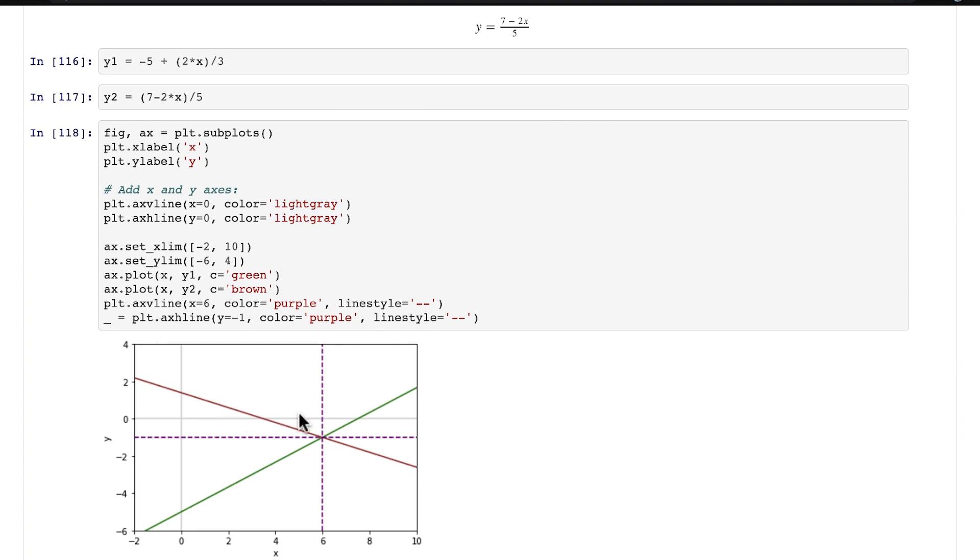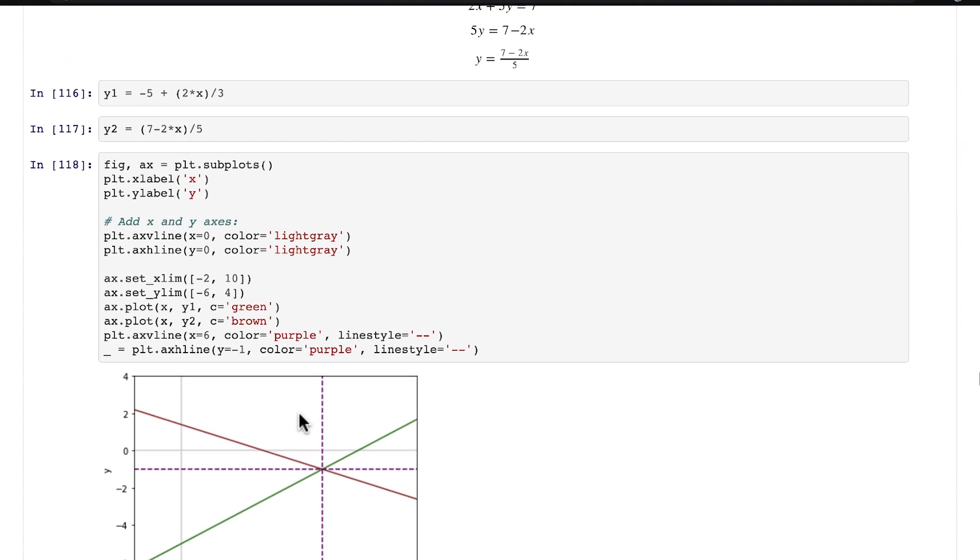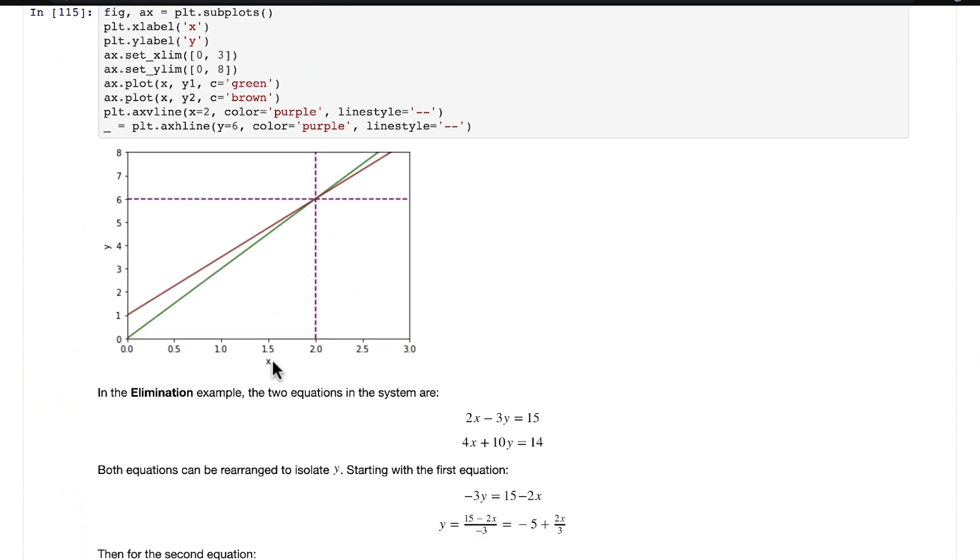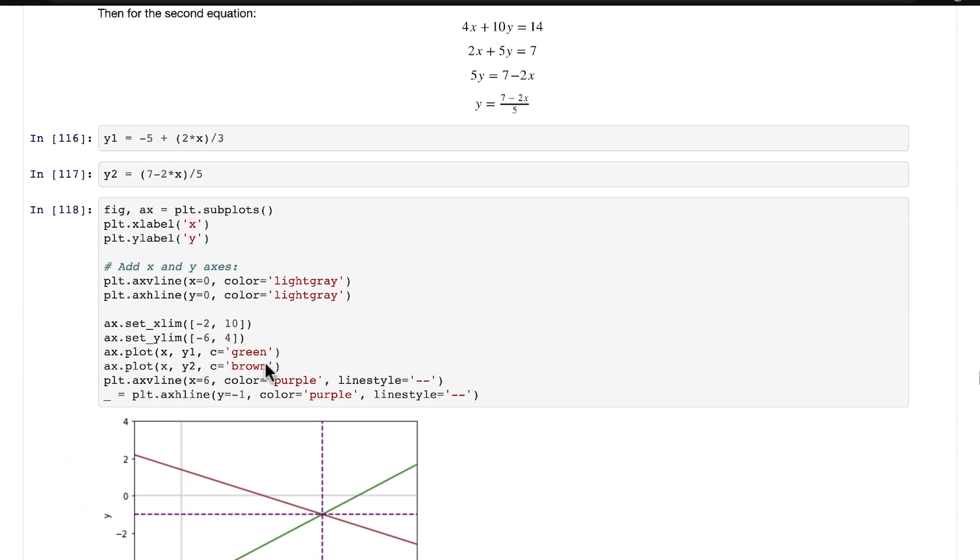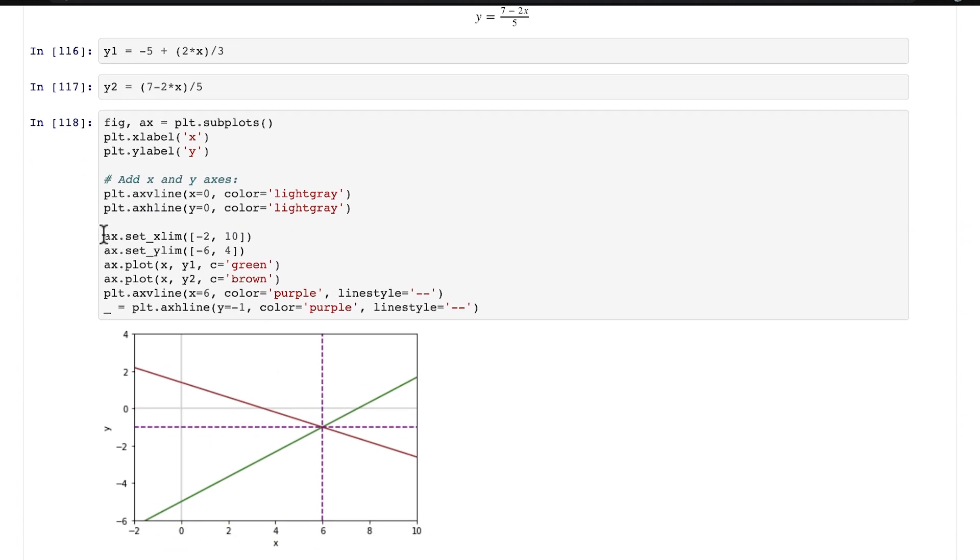You have this vertical line at x = 0, this horizontal line at y = 0, both of them in light gray. And other than that, it's basically the same as the preceding plot. All that I did was set different x and y range values that created a nice looking plot here. These two lines of code are the same as in the preceding plot.